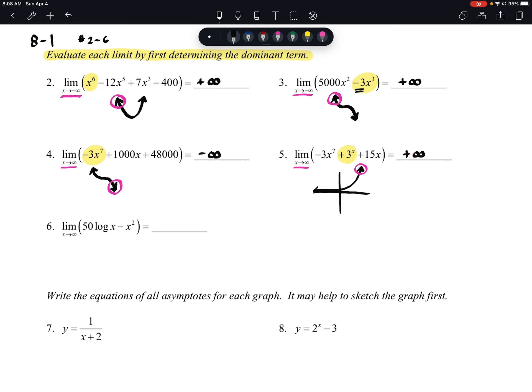And then last but not least, number six says the limit as x approaches infinity of 50 times the log of x minus x squared. And again, remember it's important to find that dominant term.